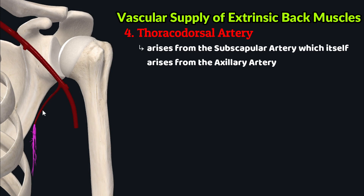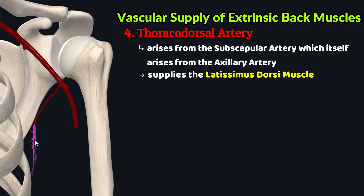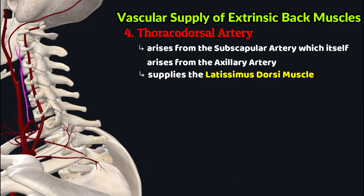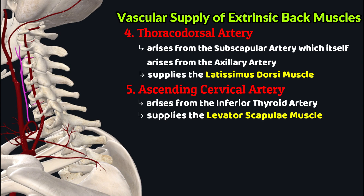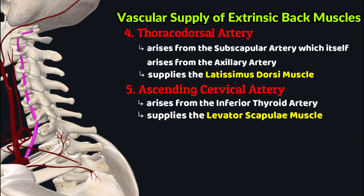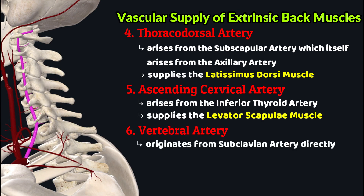The thoracodorsal artery originates from the subscapular artery, which itself originates from the third part of the axillary artery, and it supplies the latissimus dorsi muscle. The ascending cervical artery, originating from the inferior thyroid artery, supplies the levator scapulae muscle. The vertebral artery, originating directly from the subclavian artery, also supplies the levator scapulae muscle.